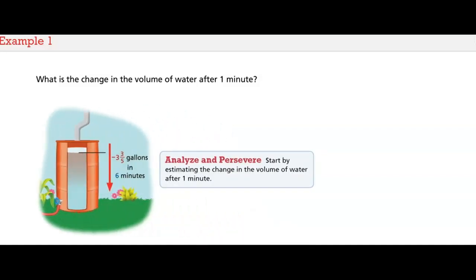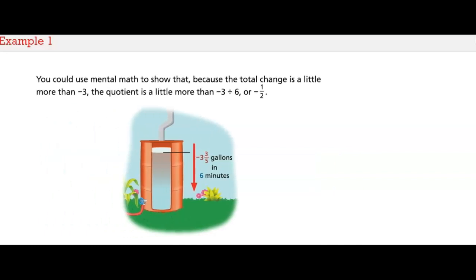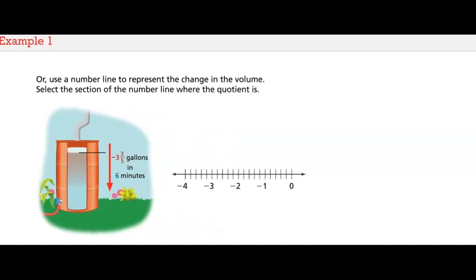You can start by estimating. There are two ways to estimate the change in the amount of water in one minute. You could use mental math to show that because the total change is a little more than negative three, the quotient should be a little more than negative three divided by six, or negative one-half. Or you could use a number line to visually estimate one-sixth of negative three and three-fifths.